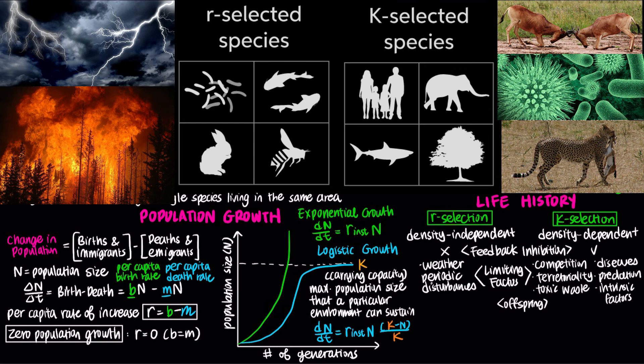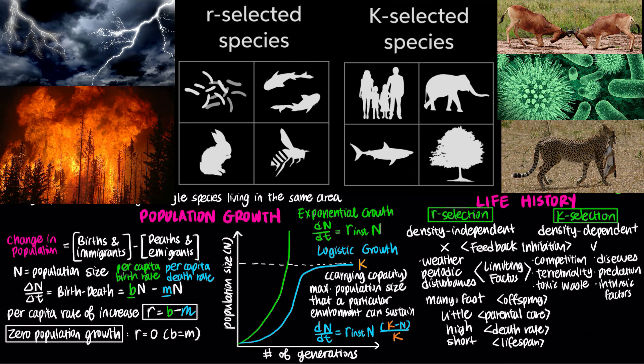Density-independent selection favors many offspring with fast rate of development, little parental care, high death rates, and short lifespan.